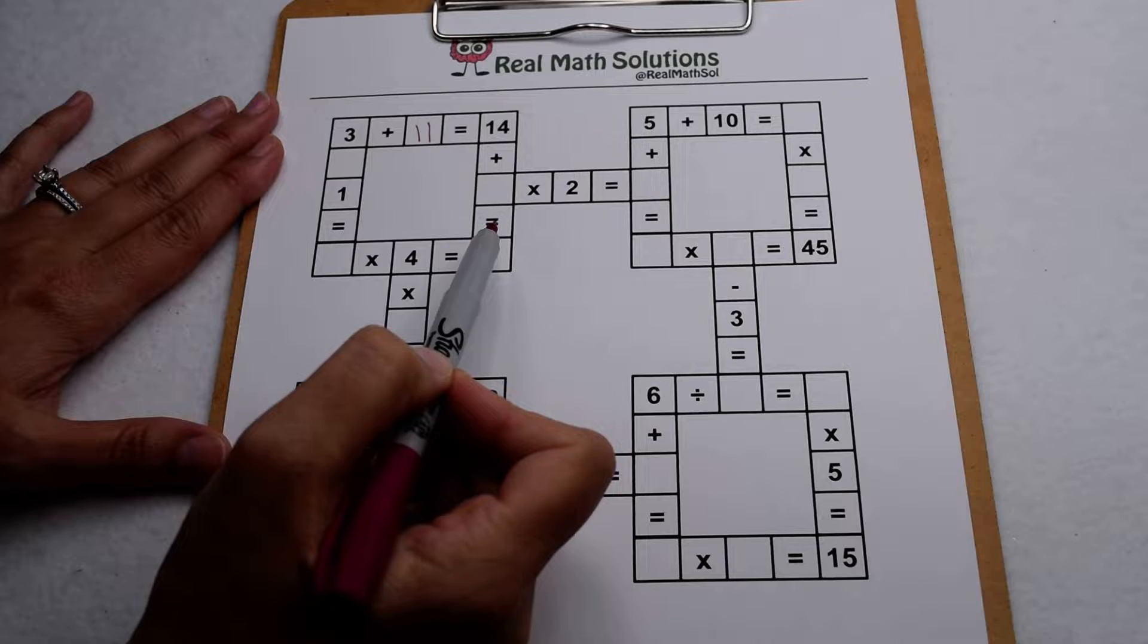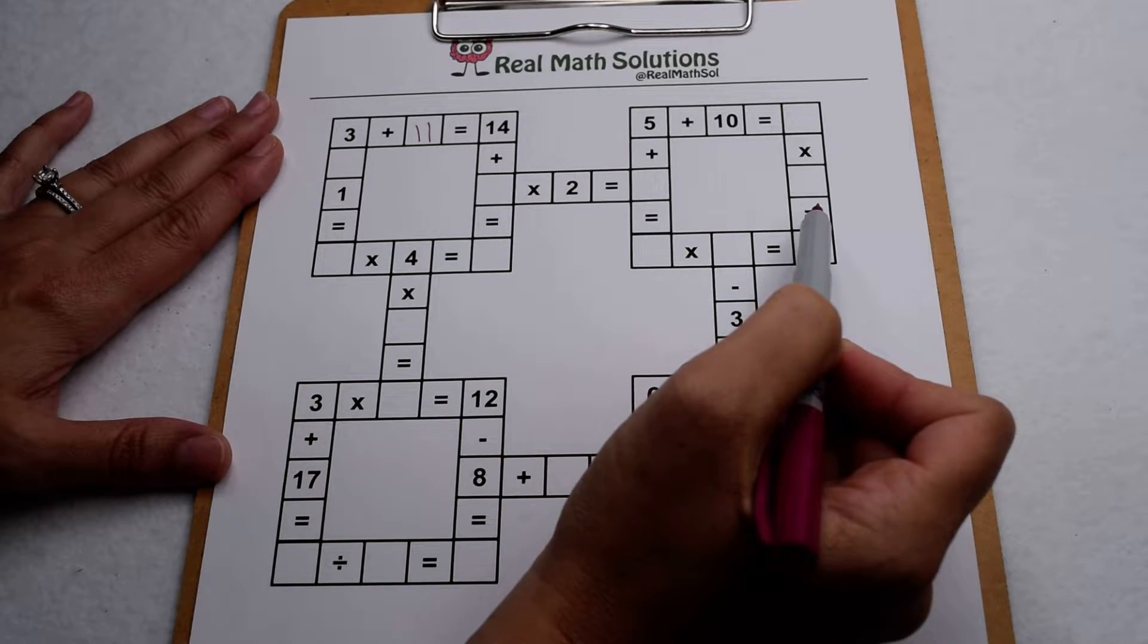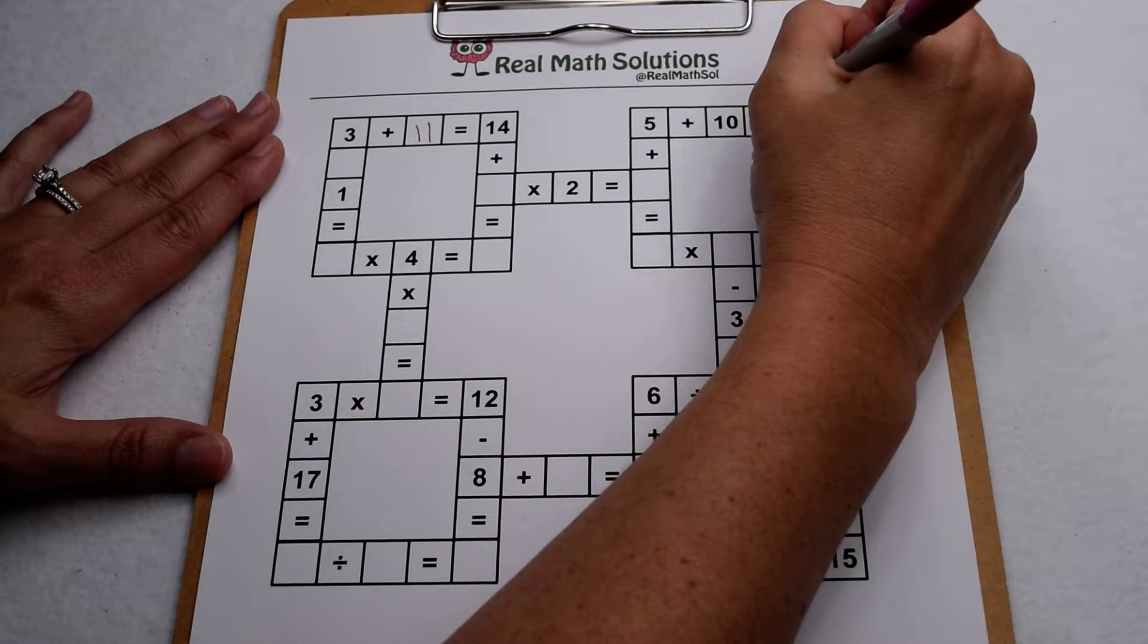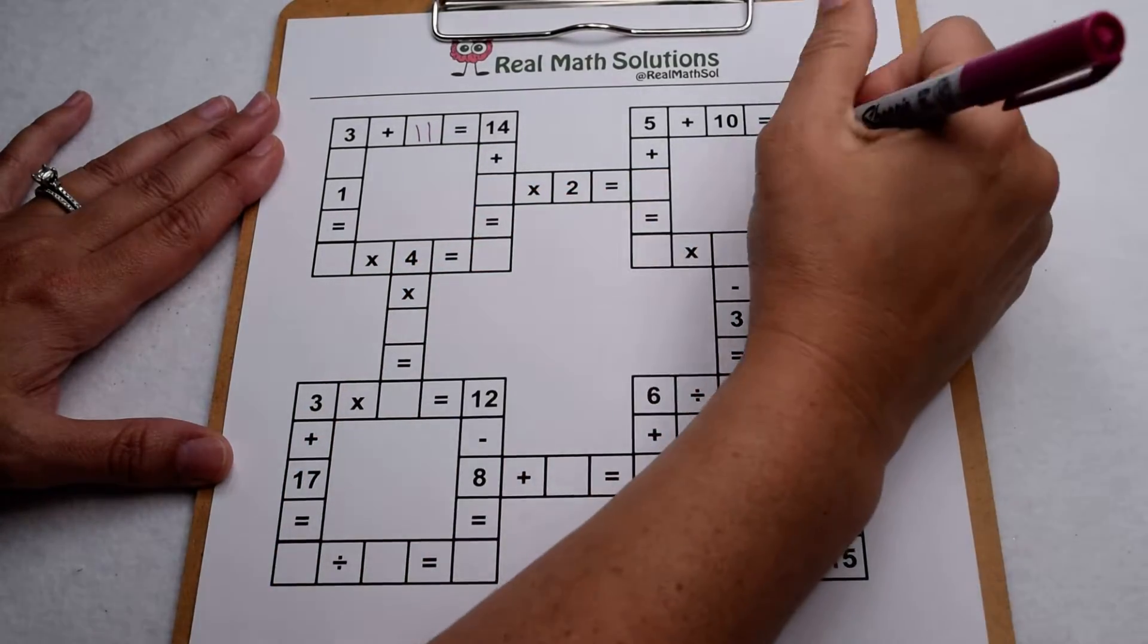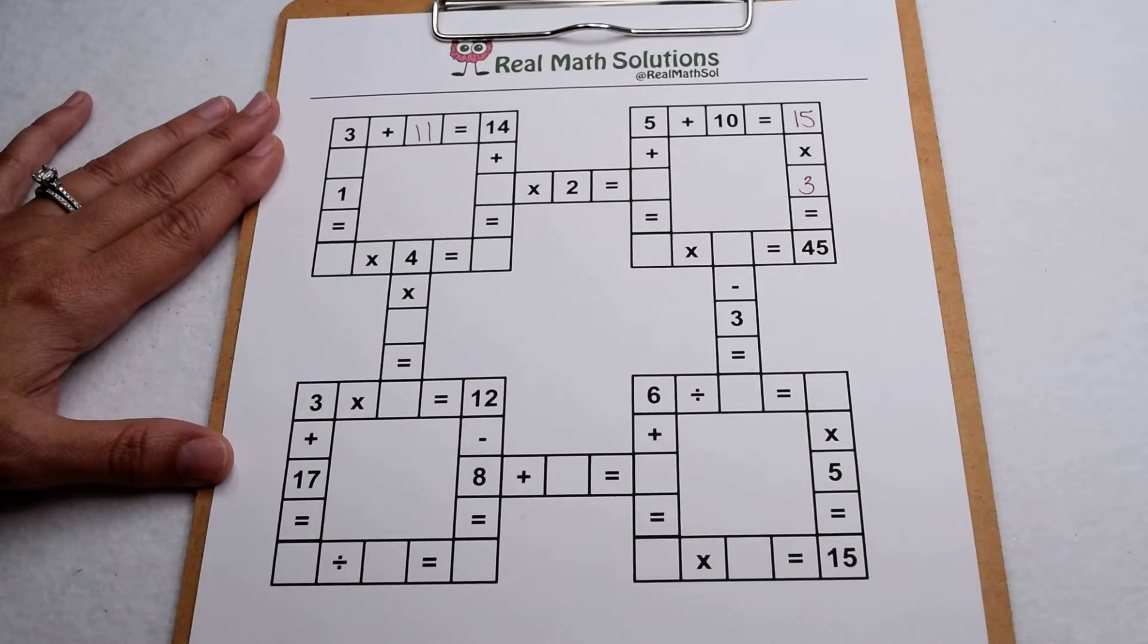We don't have enough information to complete this square so we're gonna go over to this square now. 5 plus 10 gives me 15 so I can fill that in and now we can go down. 15 times something gives me 45. Well we know 15 times 3 gives us 45.